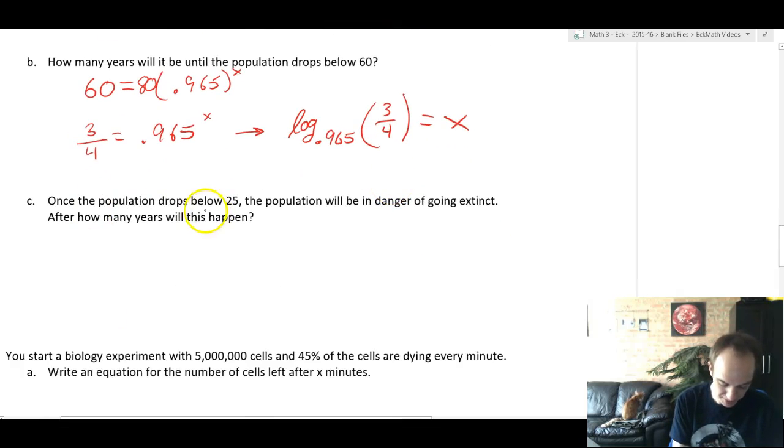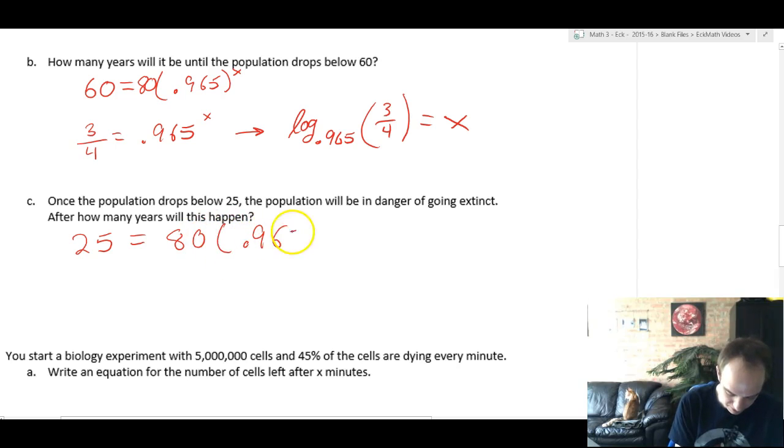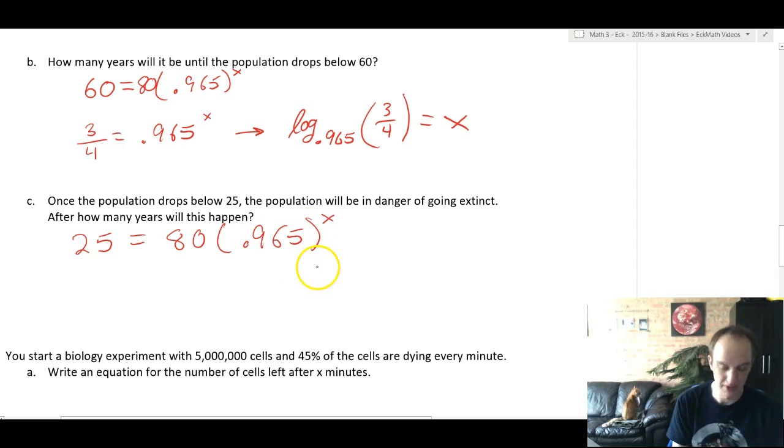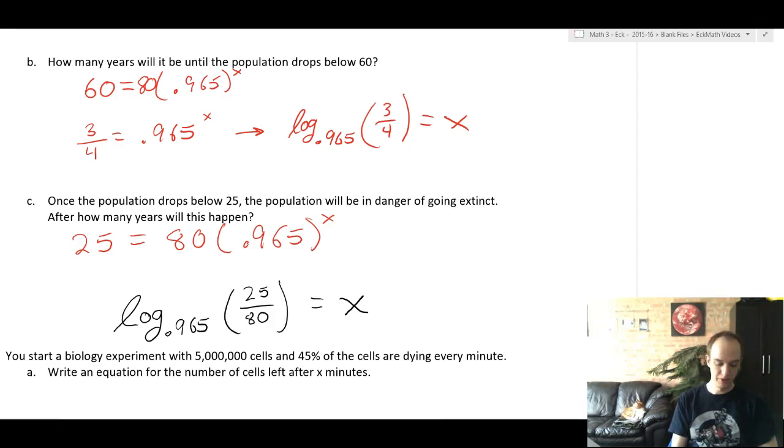Once the population drops below 25, it will be in danger of going extinct. After how many years will this begin to happen? Well, population is 25 equals the equation. I'm going to trust you guys to go ahead and solve this. I won't show you all the steps. But skipping all the steps, you would get a final answer equivalent to something like this. We divided by 80. Then we took the log base 0.965 to isolate x.